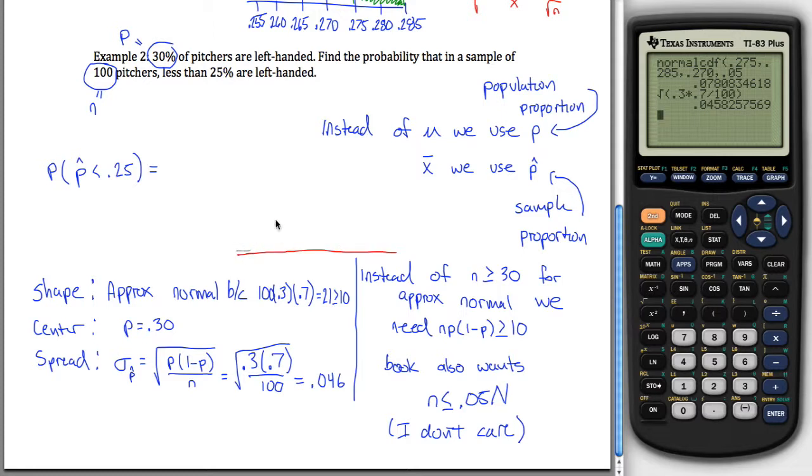We get our approximately normal distribution, which here's a poor drawing of it. We still have our center is 0.30, so we still put that right in the middle, and now our spread is 0.046, so we're going to go up and down by 0.046. That's not a very round number, so I'm not even going to bother doing that. I'm just going to put 0.25 in my picture. 0.25 is less than 0.30. It's about one standard deviation below. I think right about there would be a good place to put it.